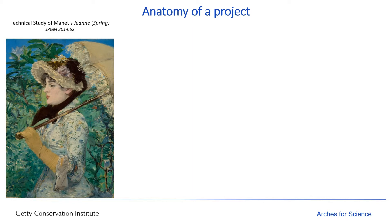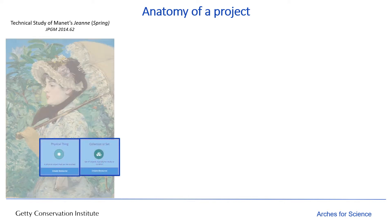For example, the painting that you see here is a physical thing that exists in the world. It's also part of one or more collections or sets of objects. It is one of several paintings by Manet, and it may also be one of several objects that were examined for a specific purpose — in this case, for an exhibition.